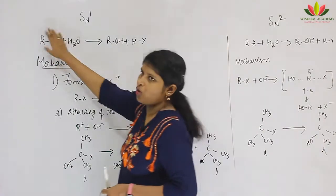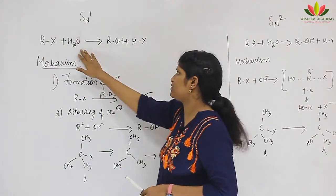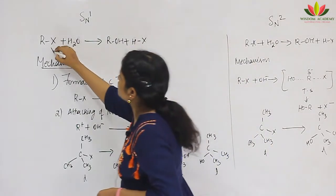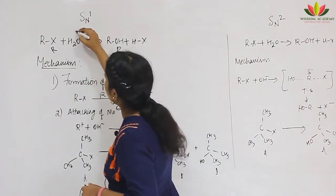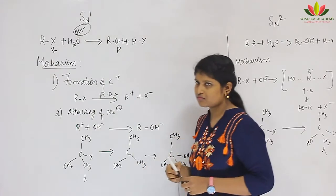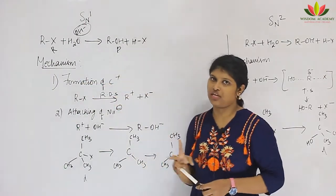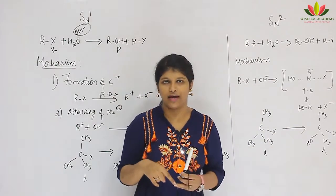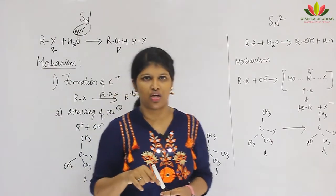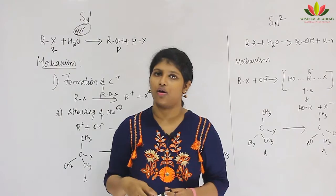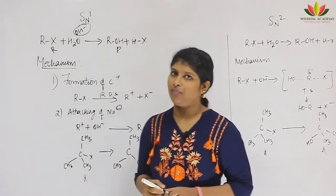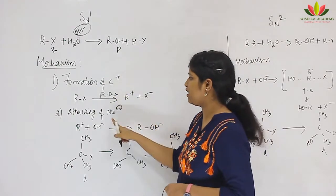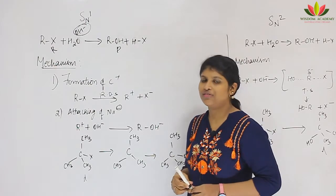In SN1, we take a halo compound RX that reacts with water, giving alcohol and HX. The mechanism has two steps. First step is the formation of carbocation: RX dissociates into R⁺ and X⁻ through heterolytic dissociation. R⁺ is the carbocation intermediate where carbon has a positive charge. This is the rate-determining step. The second step is the nucleophile attacks the carbocation — this is the substitution reaction. In the rate-determining step, only one reagent RX is present, so it is unimolecular.